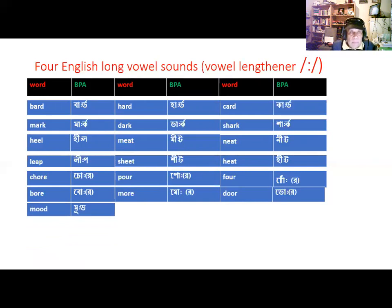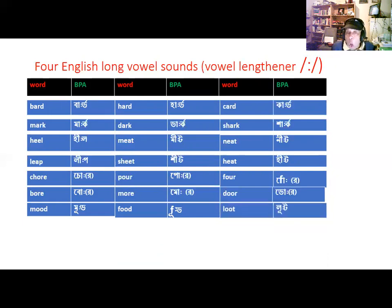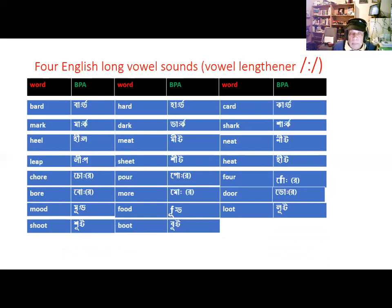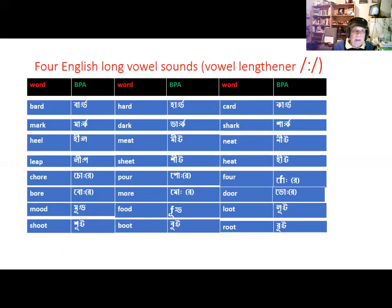The fourth and final English long vowel sound is OO. M-O-O-D, mood. F-O-O-D, food. L-O-O-T, loot. S-H-O-O-T, shoot. B-O-O-T, boot. R-O-O-T, root. We have used the vowel lengthener after the U to make the vowel sound long. Mood, food, loot, shoot, boot, and root — not mood, food, loot with a short vowel.